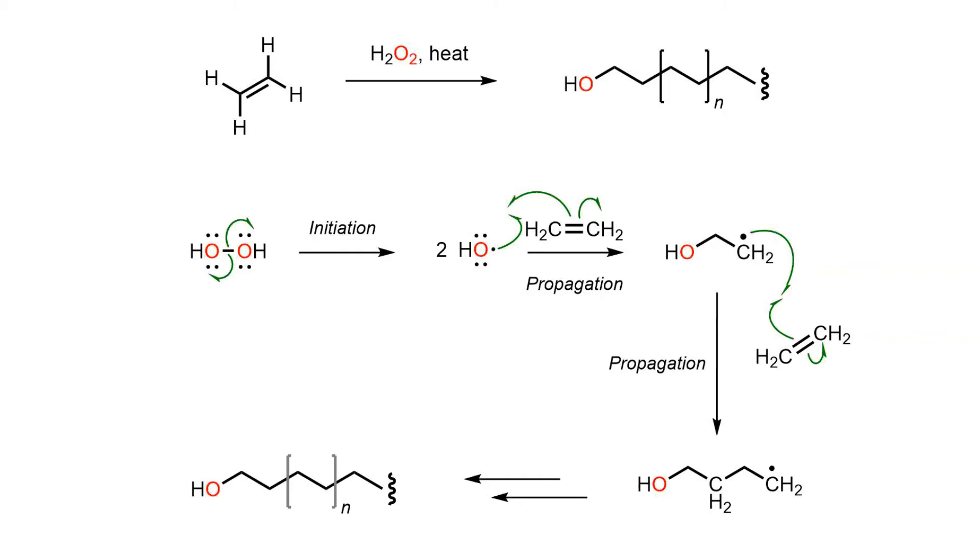The hydroxy radicals then react with an alkene molecule in a propagation step to form a carbon-oxygen bond and a carbon-based radical. The carbon radical finds an alkene molecule to react with, which begins the iterative process of polymerization.